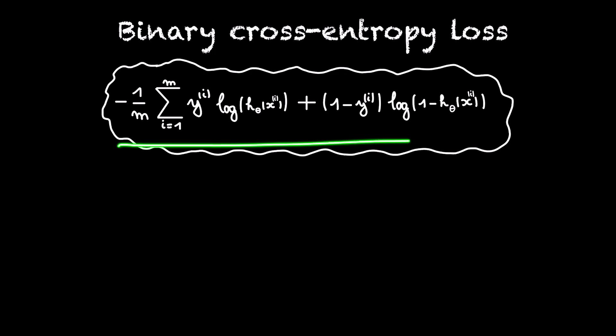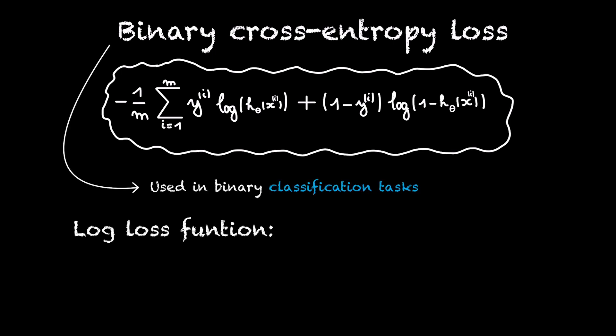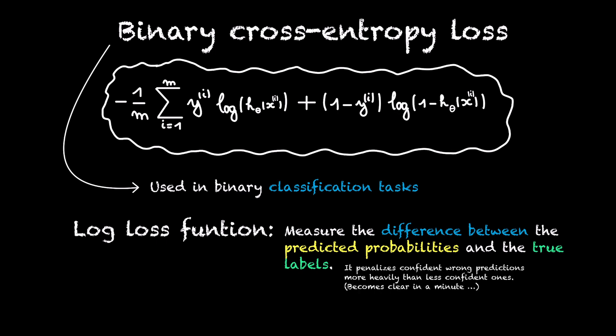This other cost function is called the binary cross entropy loss function and it's used in binary classification tasks. It is also known as log loss and measures the difference between the predicted probabilities and the true binary labels. It penalizes confidently wrong predictions more heavily than less confident ones. What this means will become clear in a minute.